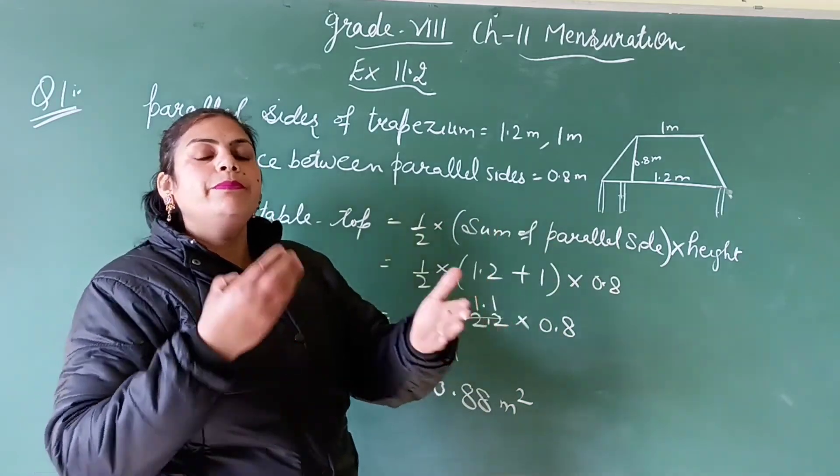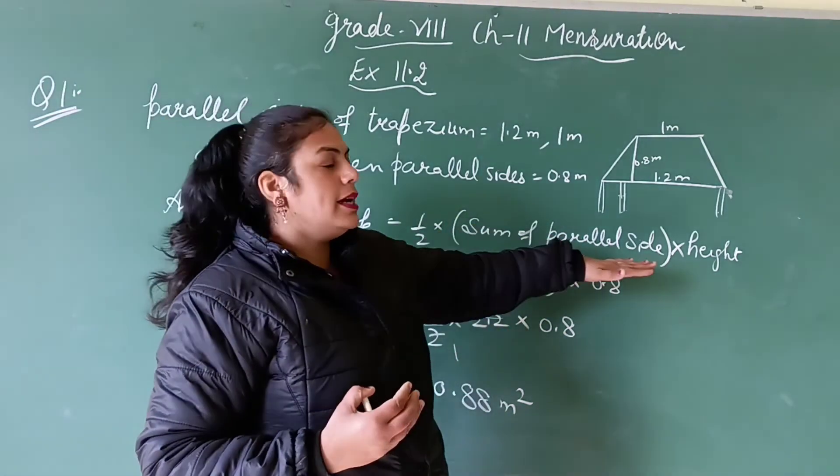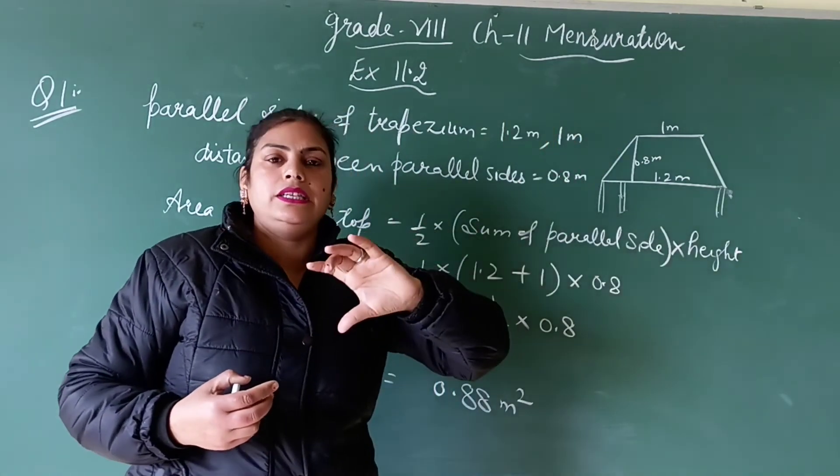Here what is the area of trapezium? Half into sum of parallel sides into distance between them, that means height.